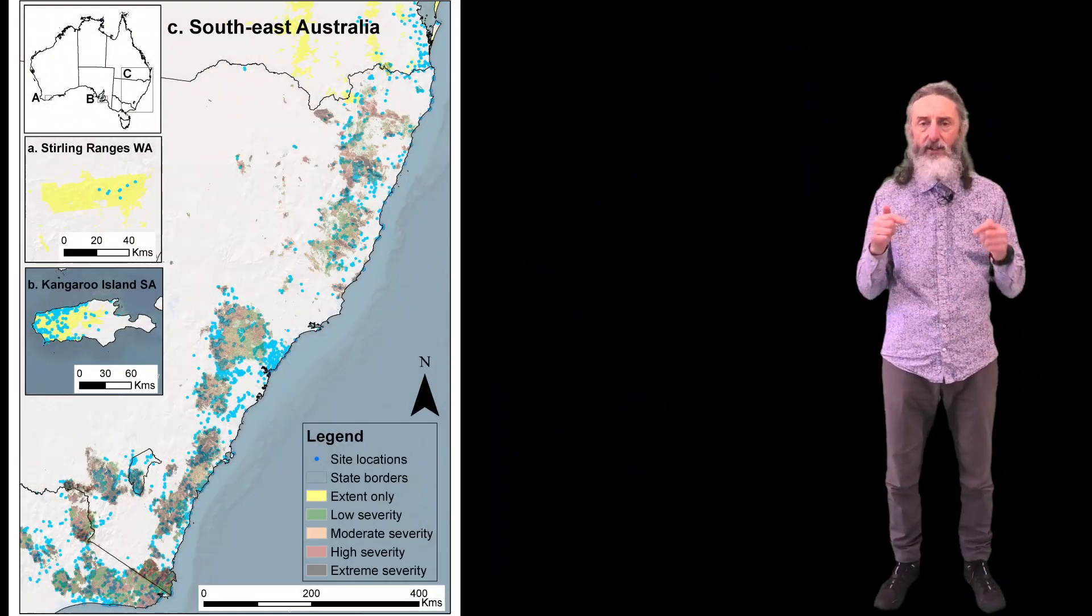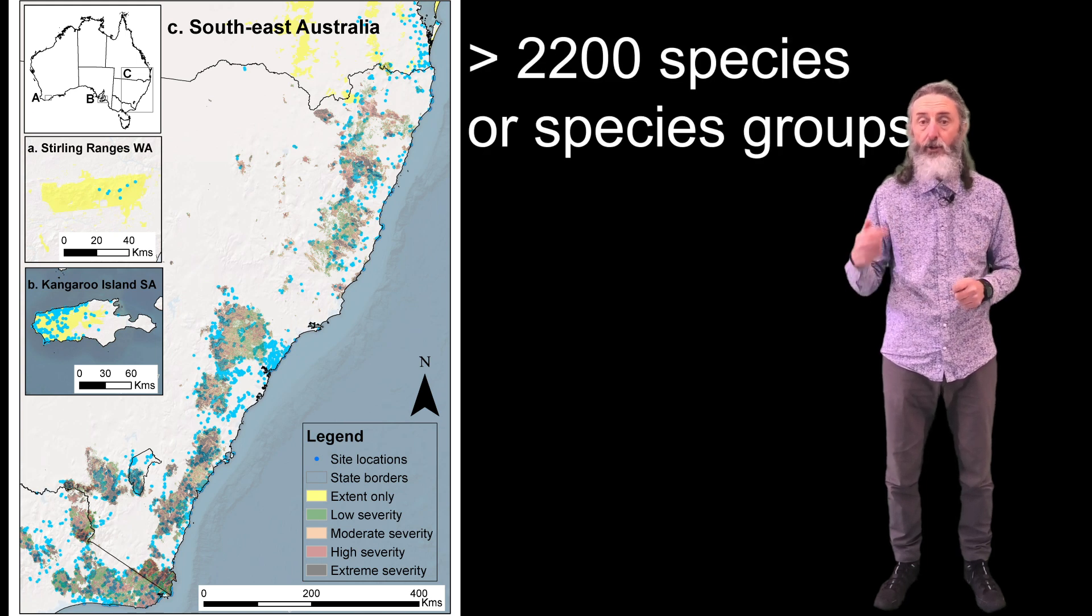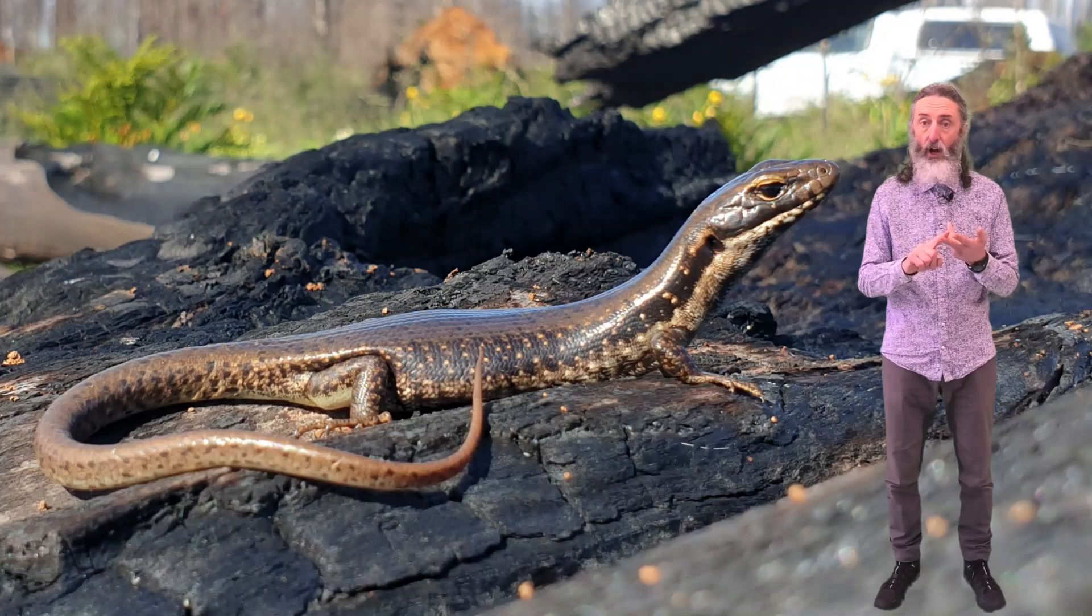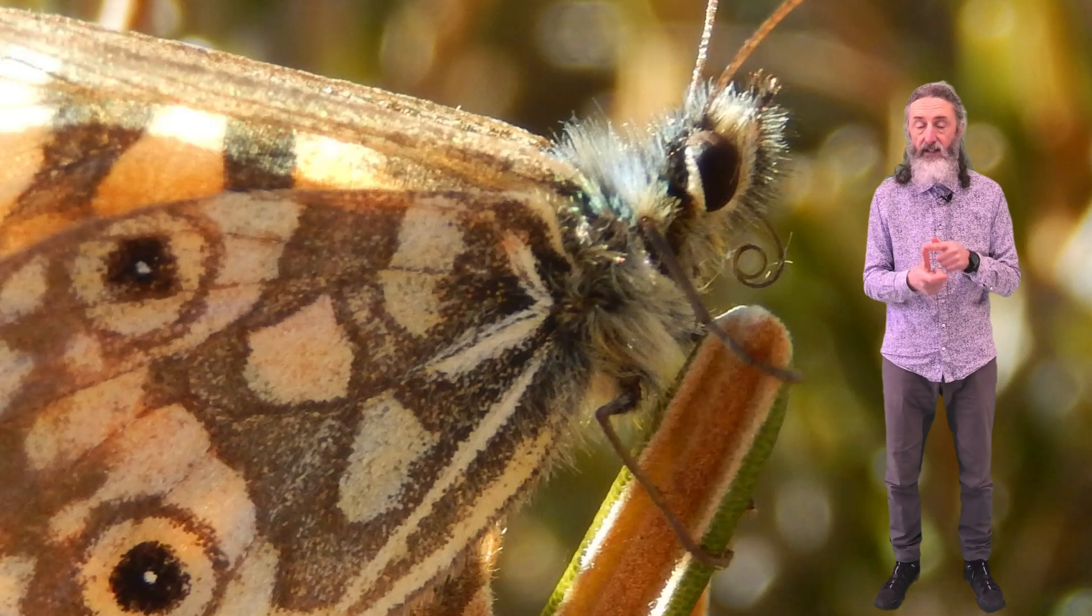We've brought together much of that research effort into a dataset that includes over 2,200 taxa covering plants, amphibians, reptiles, birds, mammals, insects and snails.